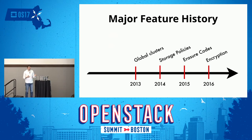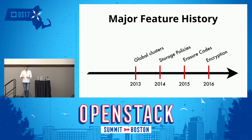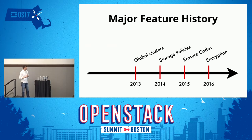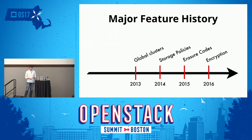The big thing about Swift — and my thing about Swift — is that I couldn't be more proud of the community that works on it. Over the years, some of the major visible changes we've done include encryption, erasure codes, storage policies, and global clusters, plus innumerable other big and small changes that have made Swift better.